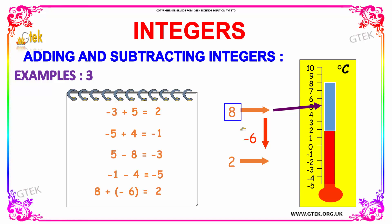Next we are going to perform subtraction of a number from a positive integer. So we have eight, from which you have to subtract six. Subtracting six, you get the value as two — one, two, three, four, five, and six. You get the value to be two, so two will be your answer.